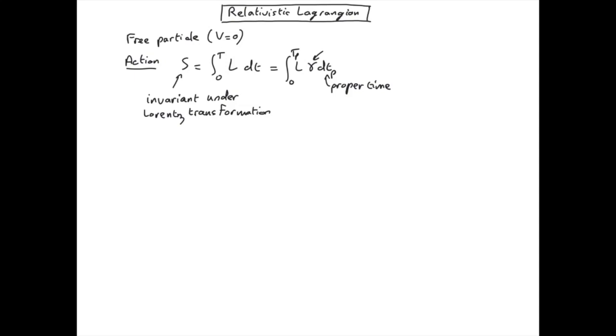So the only way we can get something which doesn't depend on the velocity is if we define the Lagrangian times the gamma factor as being a constant. In other words, we define the Lagrangian as a constant divided by gamma.